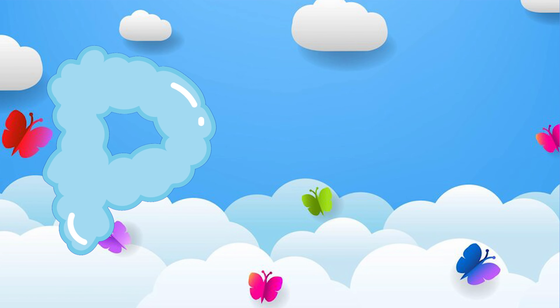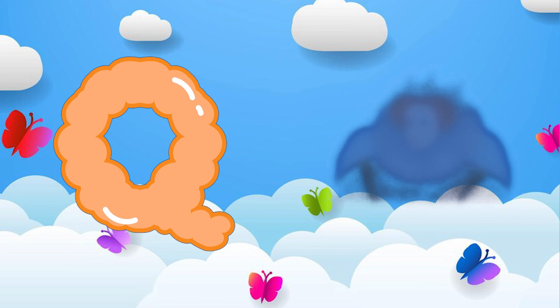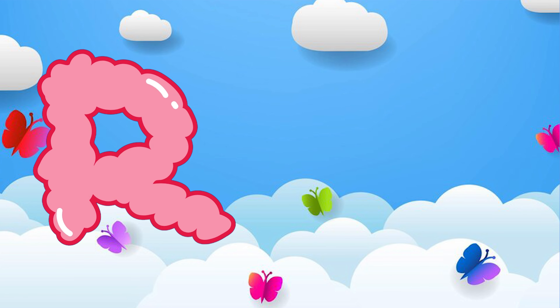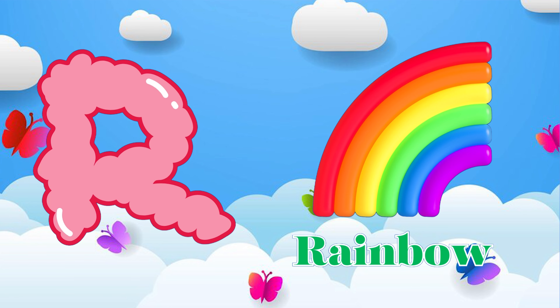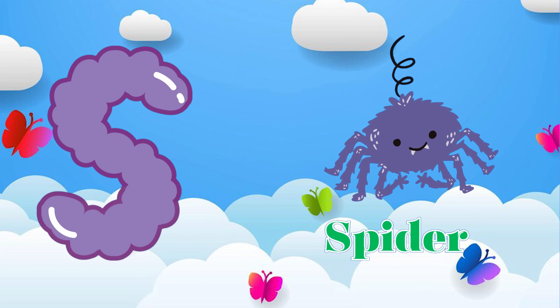P is for pony. P, pony. Q is for queen. Q, queen. R is for rainbow. R, rainbow.